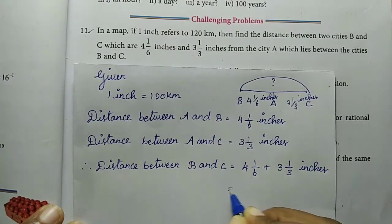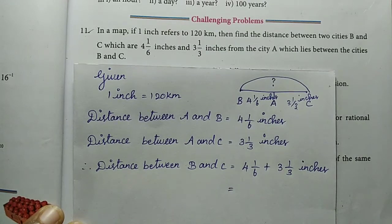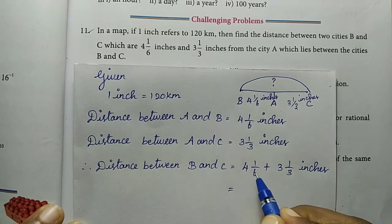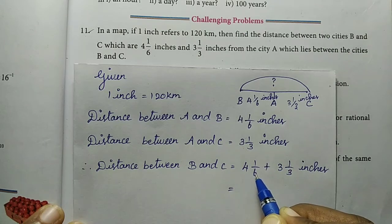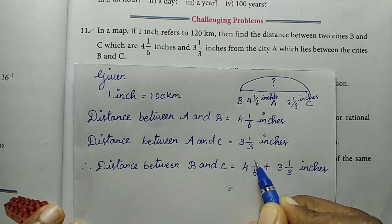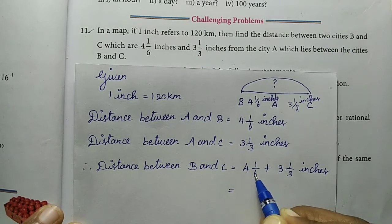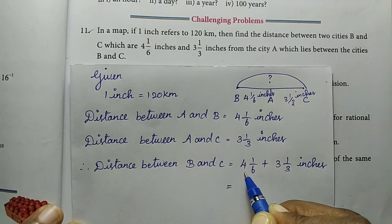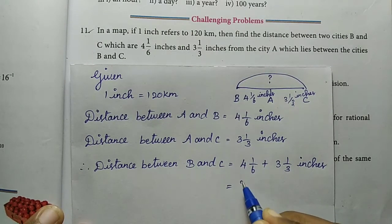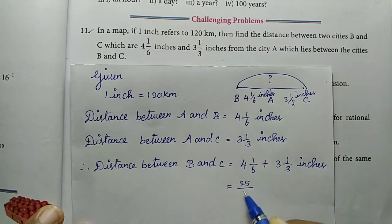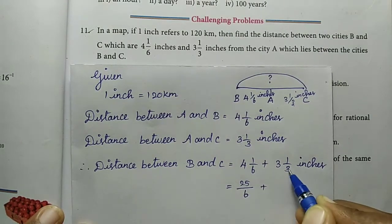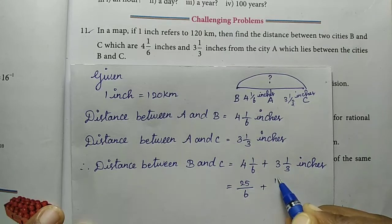These two values are mixed fractions, so we convert to improper fractions. The denominator times the whole number plus the numerator, divided by the same denominator. So 6 times 4 is 24, 24 plus 1 is 25 divided by 6. Then 3 times 3 is 9, 9 plus 1 is 10, 10 divided by 3.